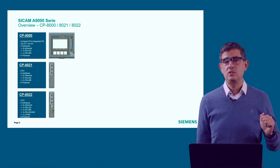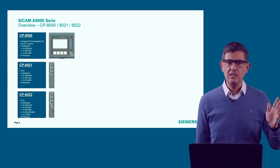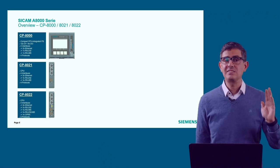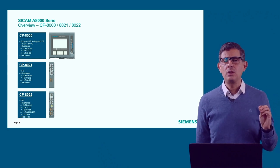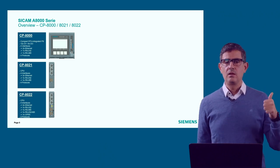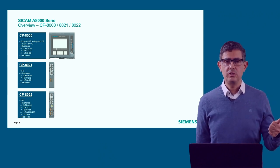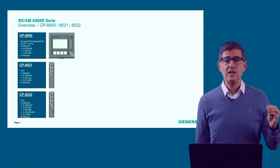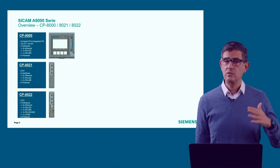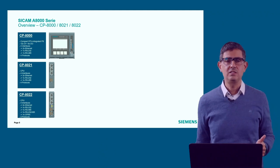Then the CP822 came along — exactly the same hardware as the CP821 with two slight improvements: one additional serial port which could be configured to be RS232 or RS485, and one built-in GPRS modem. So wireless communication is already available with this RTU.